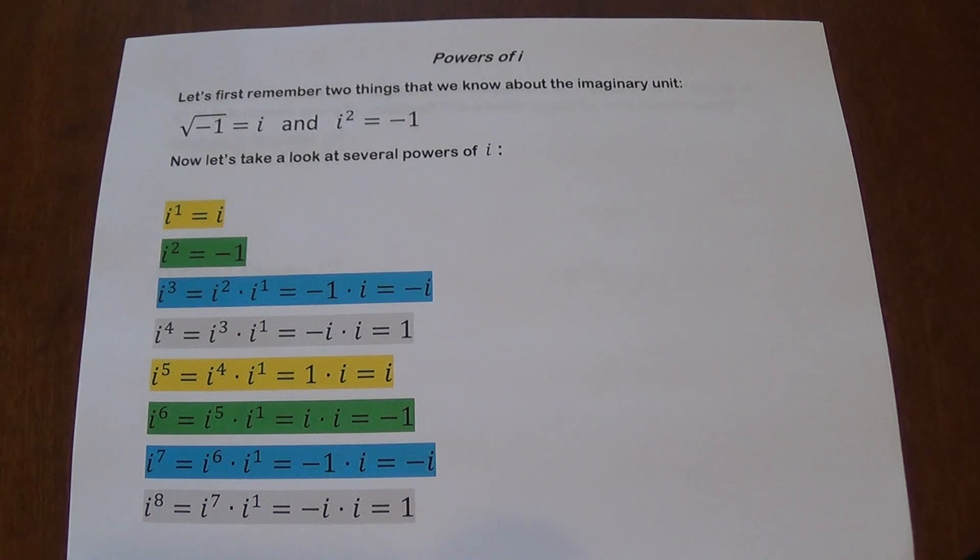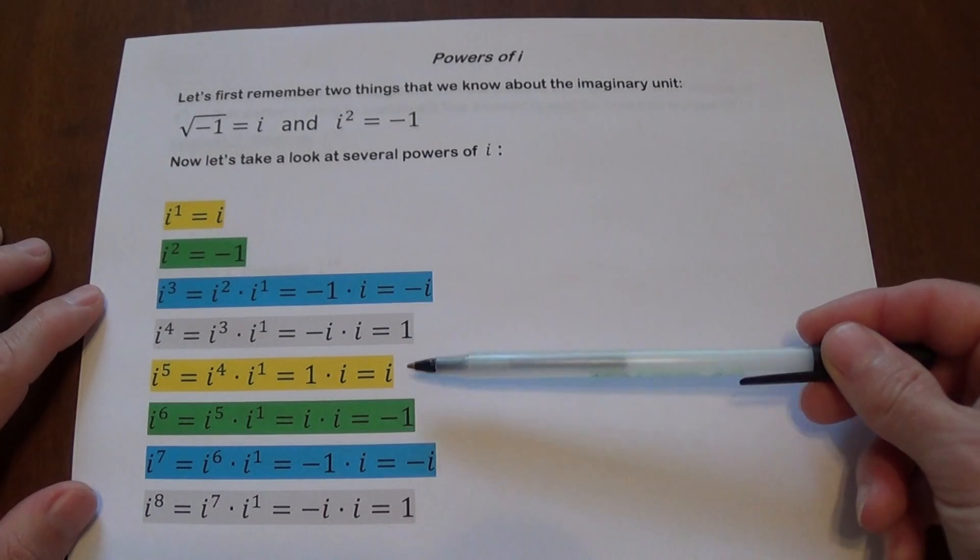What happens when we go to i to the fifth? You can write it as i to the fourth times i, which is one times i, which is i. I want you to note this.